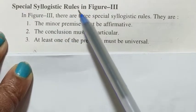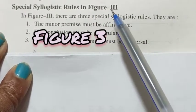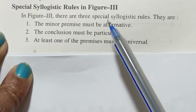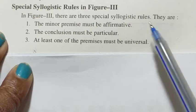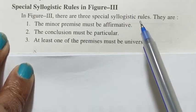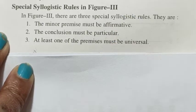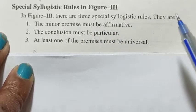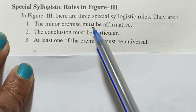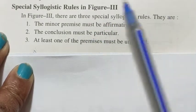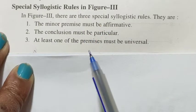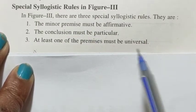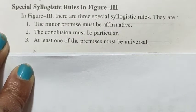Special syllogistic rules in Figure 3. There are three special syllogistic rules in Figure 3. Rule number 1: the minor premise must be affirmative. Rule number 2: the conclusion must be particular. Rule number 3: at least one of the premises must be universal.